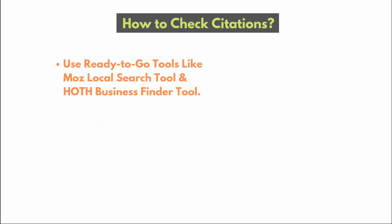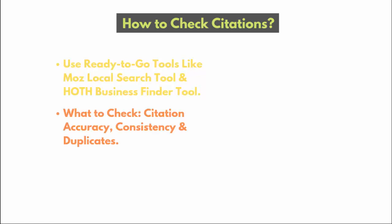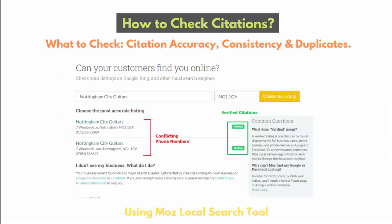To check citations you can use Moz Local or the Hoth Business Finder, but the tool we use daily now is WhiteSpark — I'd recommend that. What we're checking for is citation accuracy, consistency, and any duplicates. Then the action is: fix inaccurate ones, remove duplicates, and ensure everything is consistent across the board. For example, if a company changed their phone number from a mobile to a landline, remove the old duplicate listing.